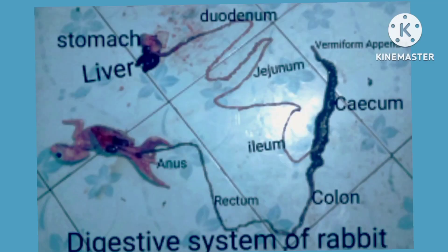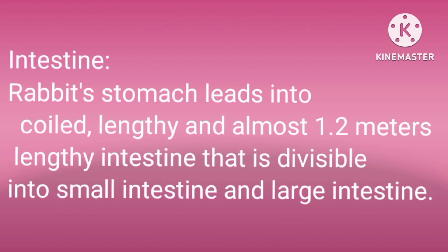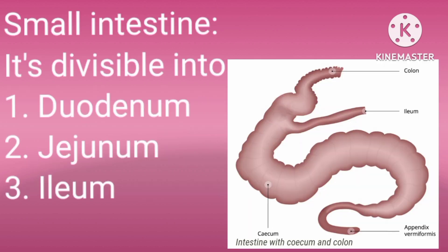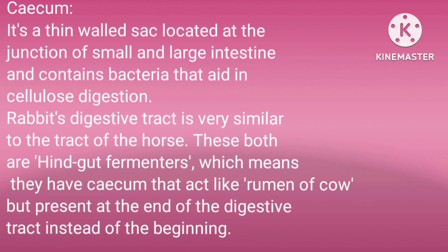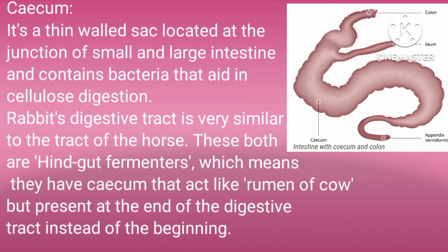As you can see in this image, we have elaborated all the digestive organs of rabbit. The rabbit's stomach leads into a quite lengthy intestine of almost 1.2 meters, which is divisible into small intestine and large intestine. The small intestine consists of duodenum, jejunum, and ileum.